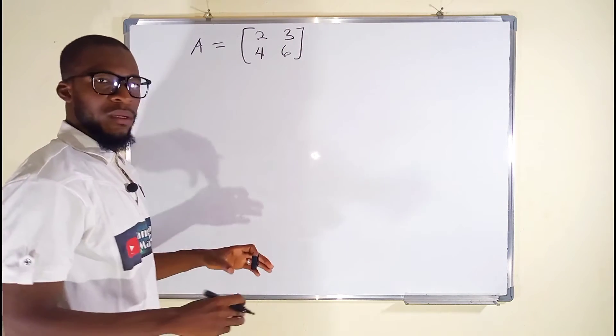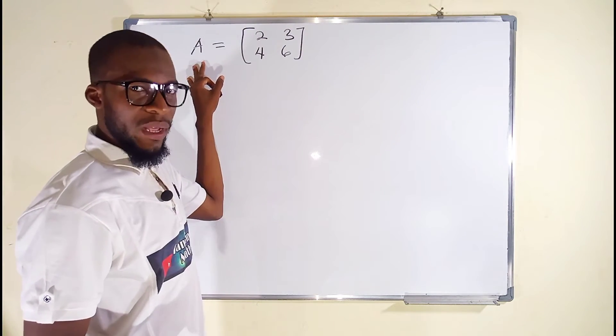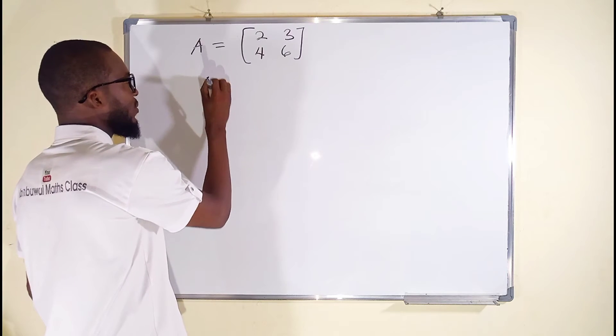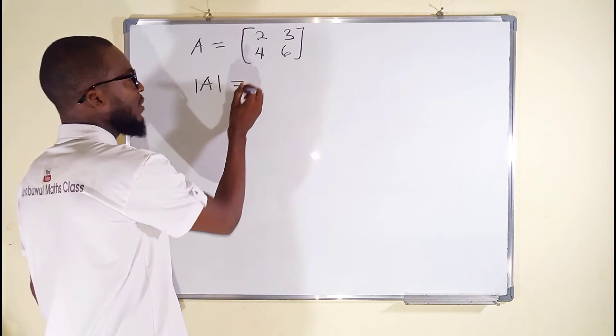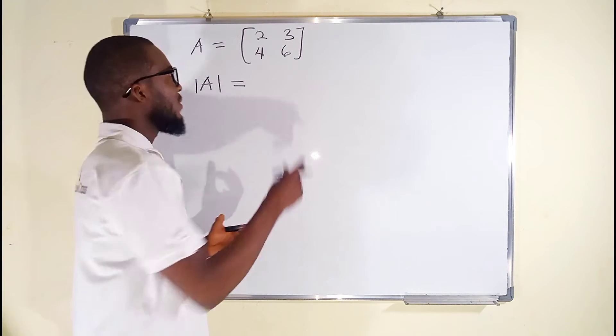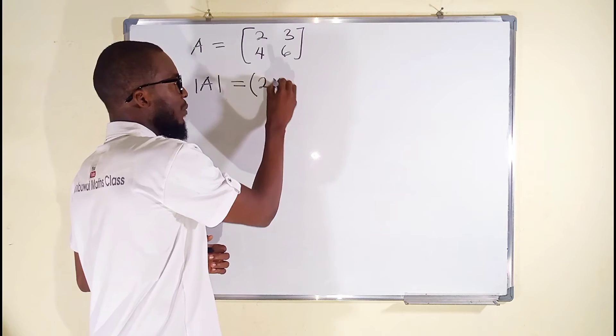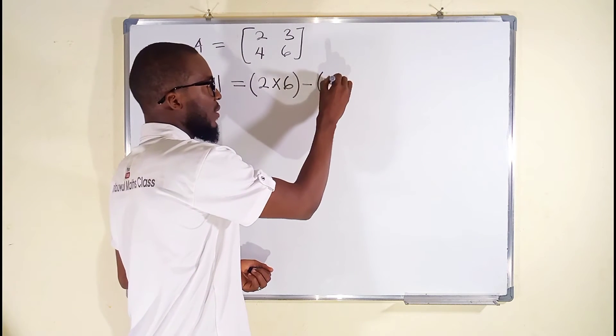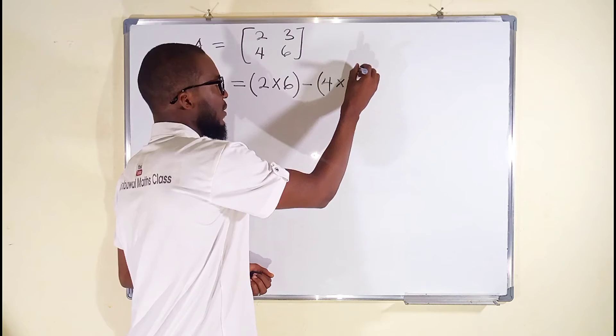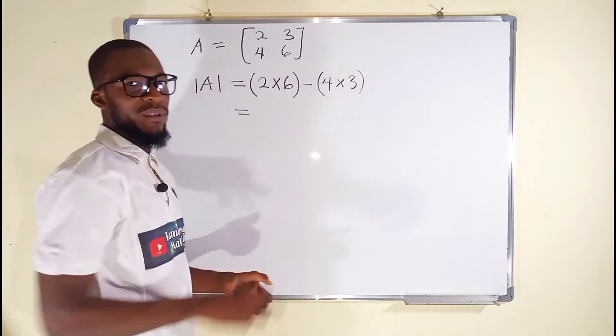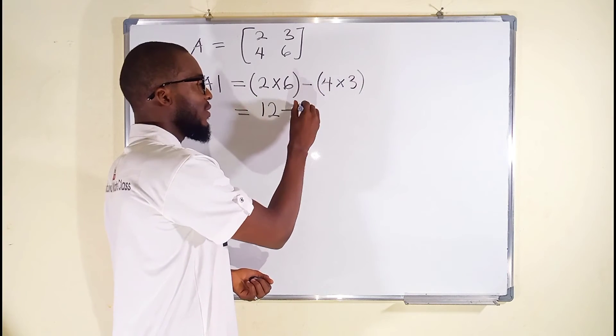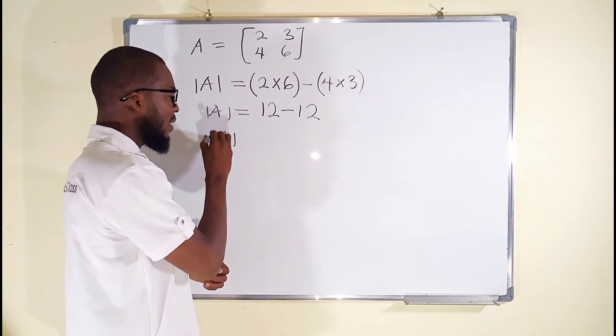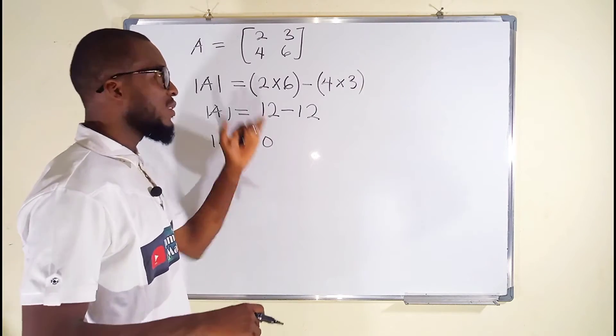We want to find out whether this matrix is singular or non-singular. To do that, we first have to find the determinant of this matrix. The determinant is equal to the leading diagonals—2 and 6, which is 2 multiplied by 6—then you subtract the other diagonals, 4 multiplied by 3. You simplify: 2 times 6 is 12, minus 4 times 3 is also 12, and 12 minus 12 is 0. Finally, you can see that the determinant is equal to 0, and hence we say this matrix is singular. A is singular.